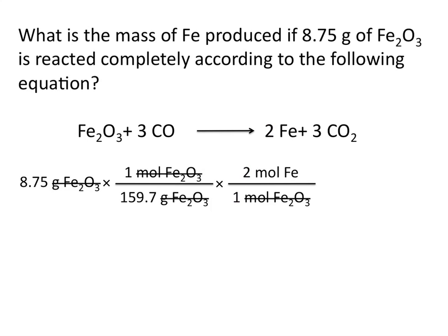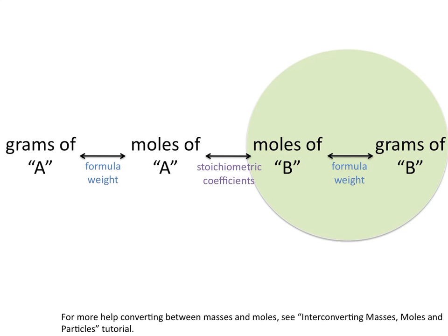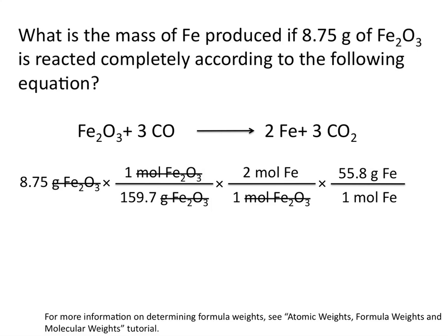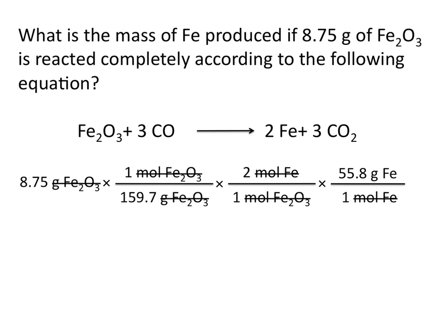Now that we have moles of iron, we can convert to grams of iron, again using a conversion factor and the formula weight of iron — or in this case, the atomic weight of iron, because it's an element and not a compound. We'll put moles of iron on the bottom and the atomic weight of iron on top, which allows us to cancel out the moles of iron. When you enter all the numbers into your calculator, you'll come up with a final answer of 6.11 grams of iron. This tells us that if 8.75 grams of iron oxide is reacted completely, 6.11 grams of elemental iron will be produced.